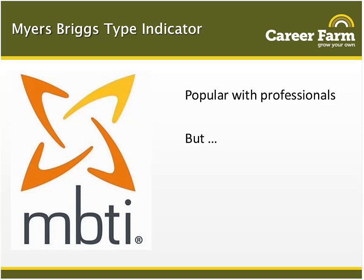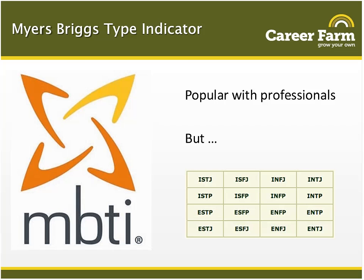I think you're either an MBTI person or you're not, and this is the reason. You may be an ISTJ, an ISFP, you may be an ENFP — but what does anybody else know about what that means, and how does it really help people understand how they relate to each other? So it's very sophisticated but I don't think it's user friendly.